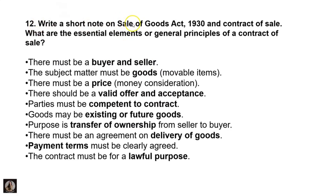The next question: write a short note on the Sale of Goods Act 1930 and contract of sale. What are all the essential elements or general principles of a contract of sale? There must be a buyer and seller; the subject matter must be goods — a movable item; there must be a price with money consideration; there should be a valid offer and acceptance; parties must be competent to contract; goods may be existing or future goods; the purpose is transfer of ownership from seller to buyer; there must be an agreement or delivery of goods; payment terms must be clearly agreed; and the contract must be for a lawful purpose.